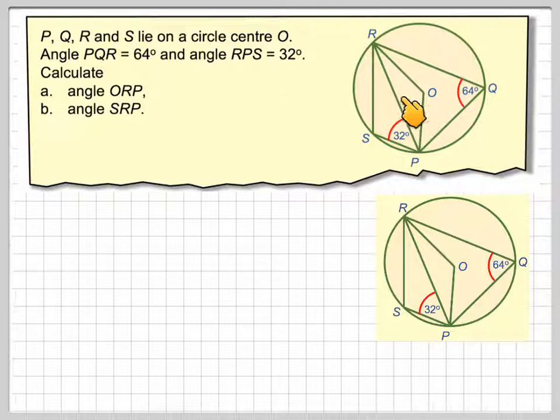Angle PQR, this angle here, is 64 degrees and angle RPS is equal to 32 degrees. You need to remember, these diagrams are never drawn to scale.